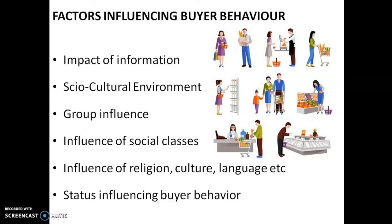The second factor is the socio-cultural environment. The buyer lives in a society influenced by it and in turn influences its course of development. He is a member of several organizations, formal or informal; a unit of several groups; belongs to a family, a religion or caste, a language group, a professional forum, or a political or cultural body. There is constant interaction between the individual and the organizations he belongs to, and all these interactions leave imprints that influence his buying pattern.